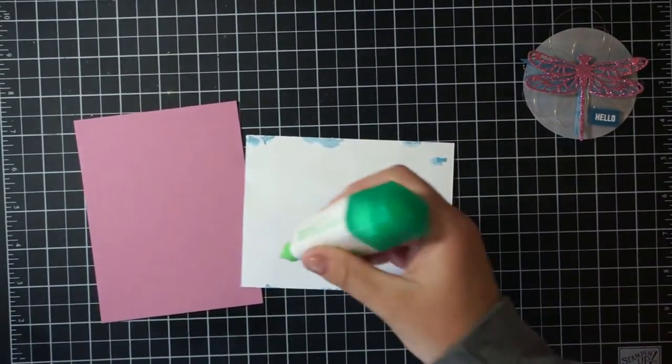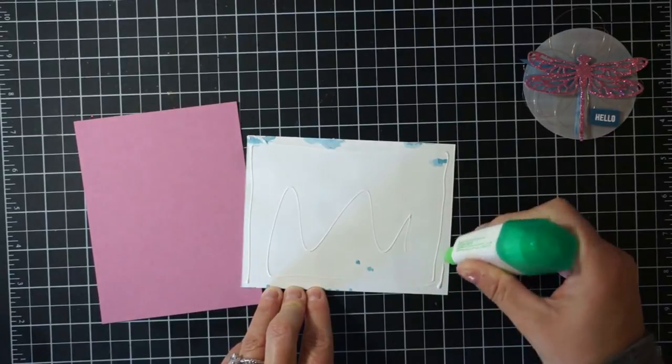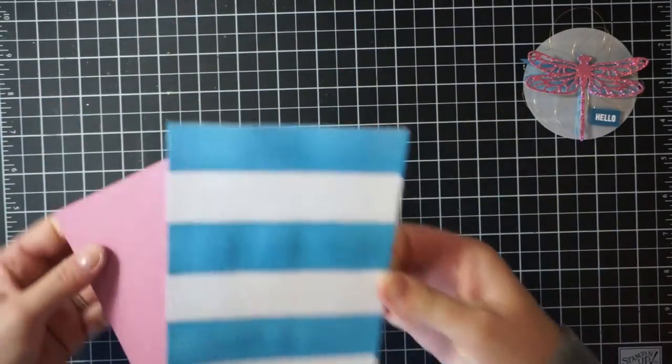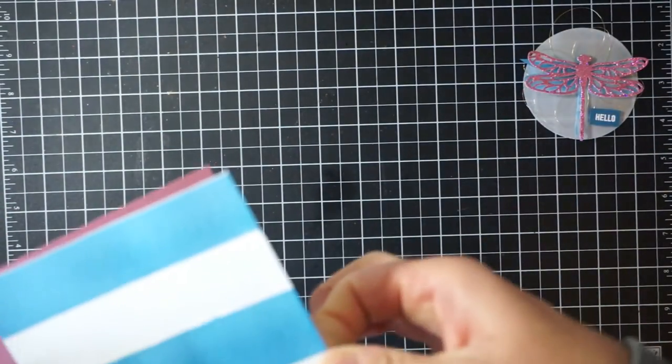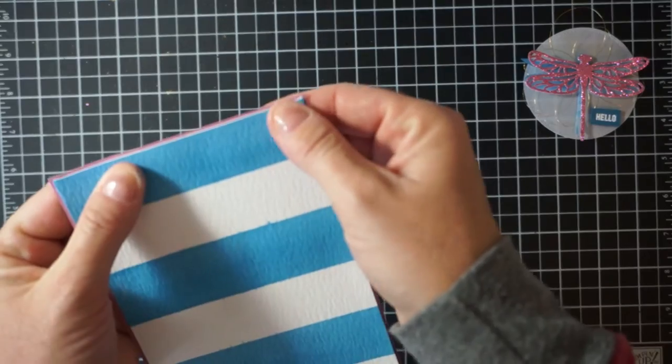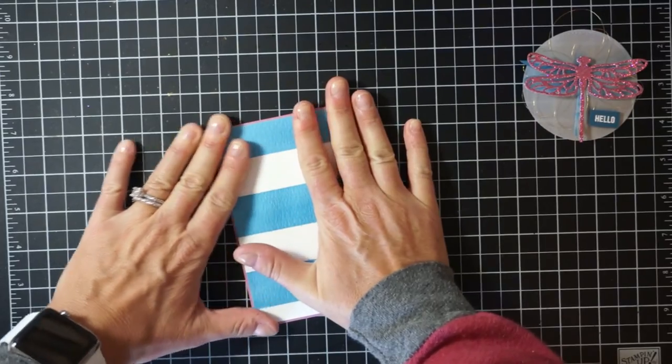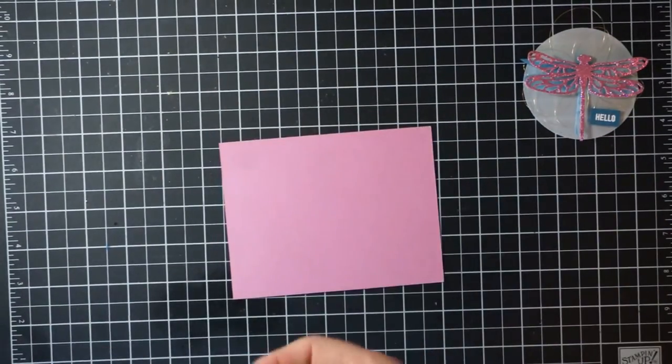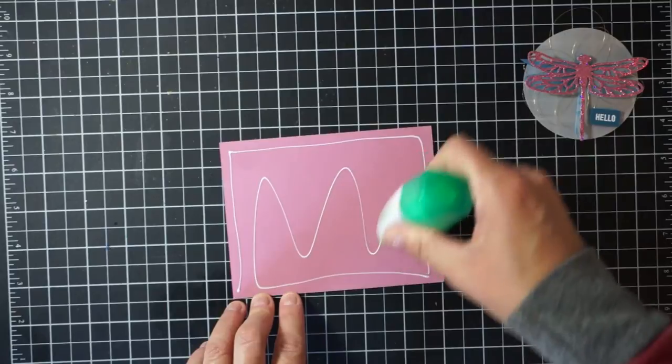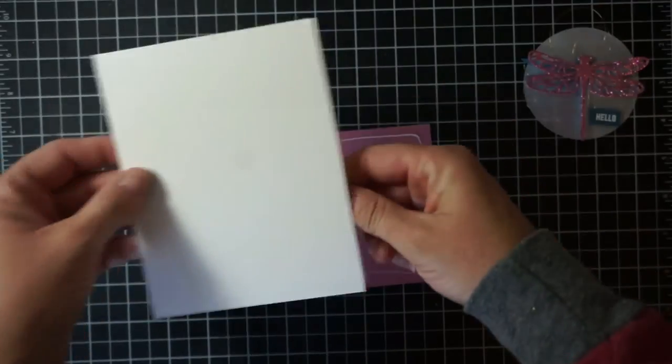So now I'm just going to start assembling my card. I've got some Tombow multi-purpose glue. I'm going to adhere this watercolor stripe background to a piece of sweet sugar plum cardstock. I did cut down the watercolor piece to be four by five and a quarter and then the sweet sugar plum, that's a mouthful, piece is just one eighth inch larger than the stripe piece.